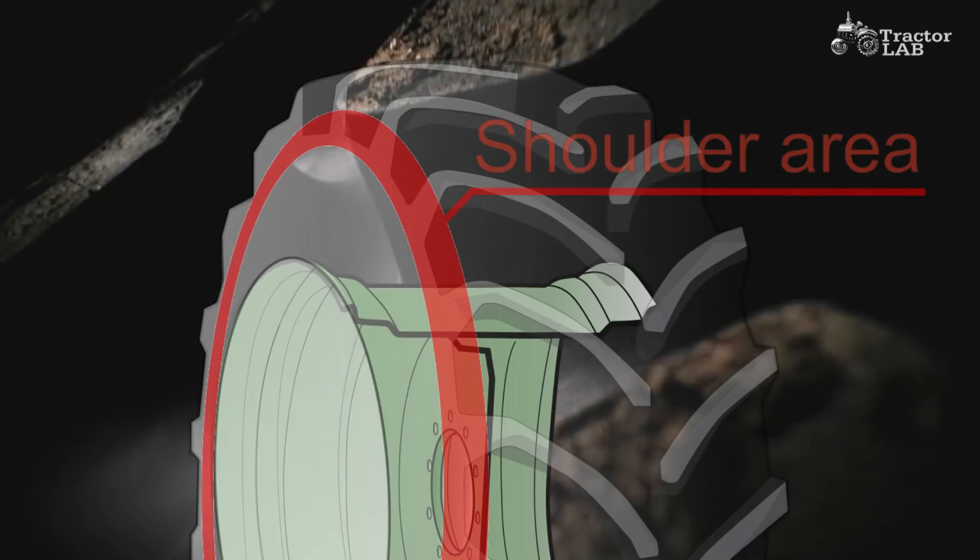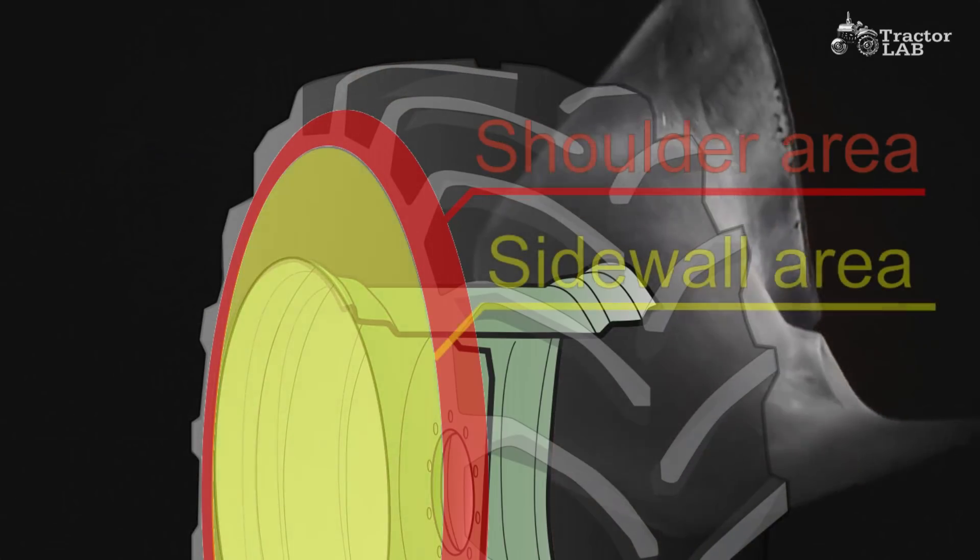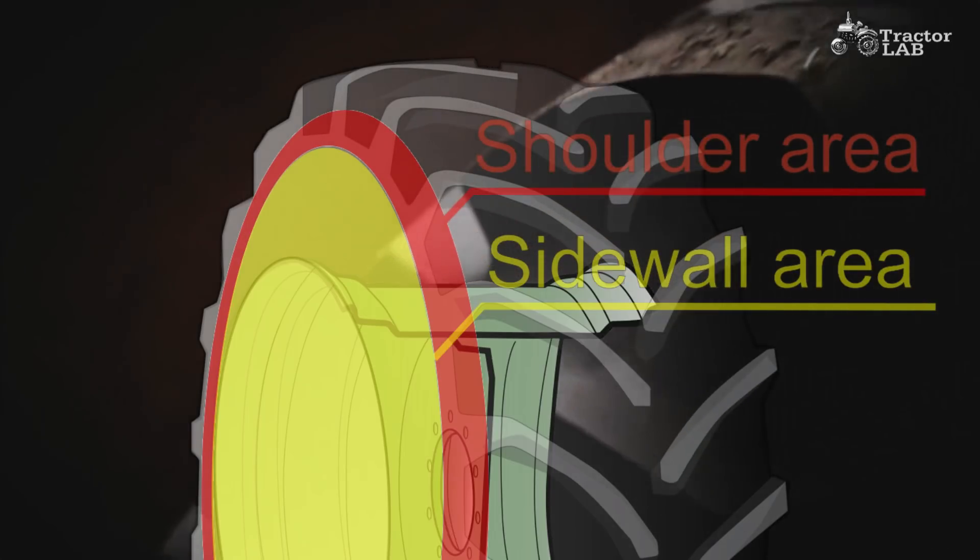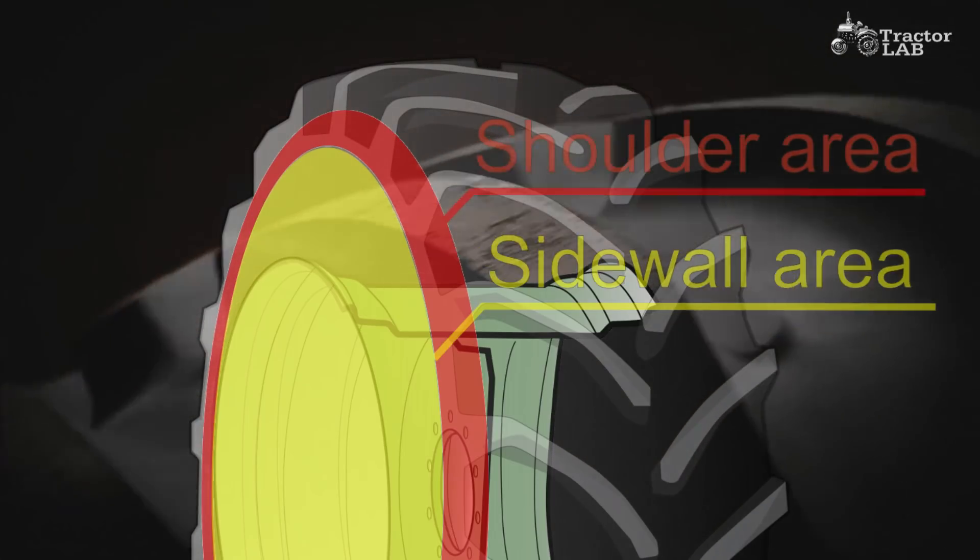By spacing the tire beads farther apart, the sidewalls are forced to flex in an area lower than normal and this can result in circumferential carcass breaks and separation.